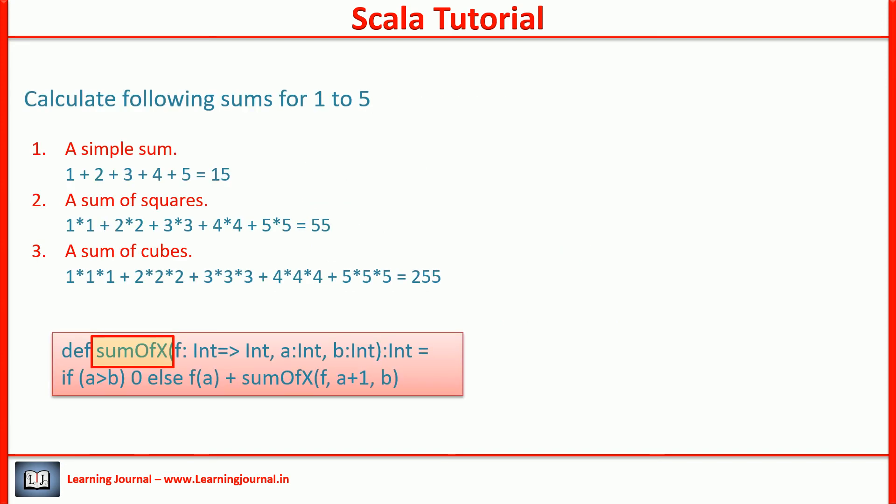So, I decided to create a higher order function: sum of x. The first parameter is the logic. Other two parameters are lower and upper bounds. I can fulfill all three requirements using this higher order function. To calculate a simple sum, I can use an identity function. To calculate a sum of squares, I can use a squaring function. Similarly, to calculate a sum of cubes, I can use a cube function.